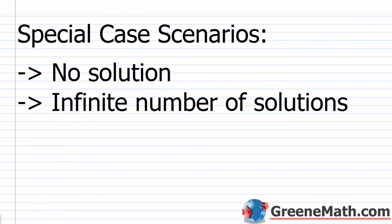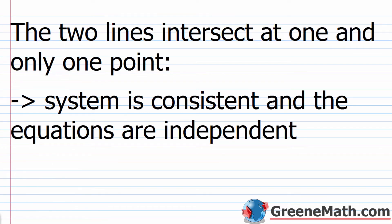Now let's look at special case scenarios. You may encounter a system with no solution, or one with an infinite number of solutions. Most of the time the two lines intersect at one and only one point — the system is consistent and the equations are independent, as in the two examples we just solved.